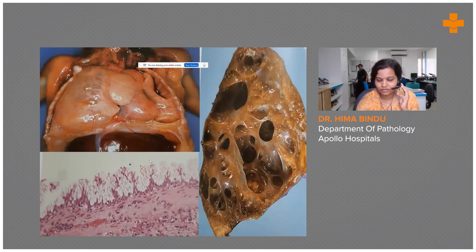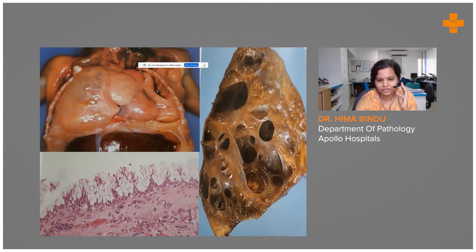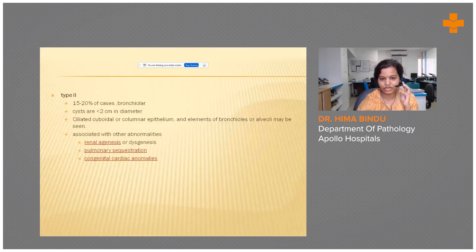This is an example of Type 1 where the fetus developed hydrops and came for fetal autopsy. You can see the enlarged right lung compressing the heart and the adjacent left lung, leading to hydrops. The cross-section shows multiple cysts, and microscopy showed lining epithelium with mucinous metaplasia, which can be a pre-cancerous change and may develop into malignancy if not attended to.